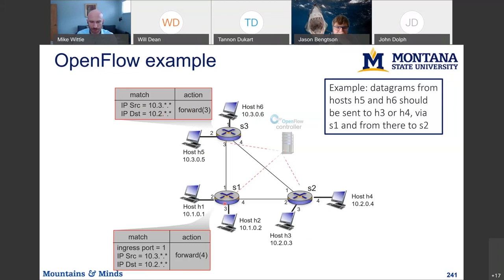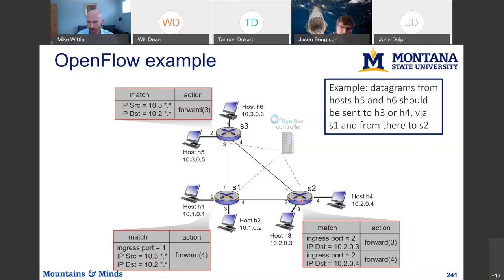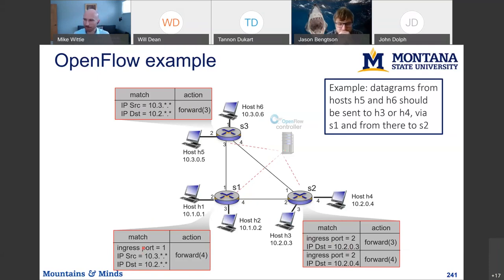A similar rule can be installed at the next switch: for the same source prefix and destination prefix, for packets coming in on ingress port 1, forward out interface 4. And at the final router, depending on the full destination — not just the prefix — we may forward data out interface 3 or interface 4. Right away you can see this gives more flexibility: you can still do IP-based forwarding, still have prefix-based rules, and you can factor in which interface traffic came in on.